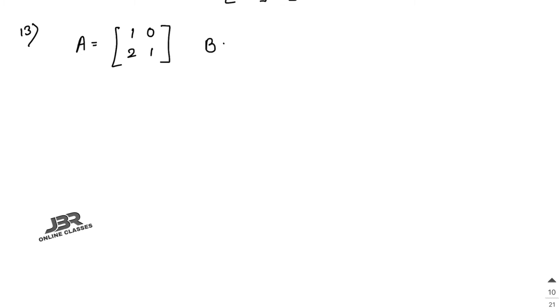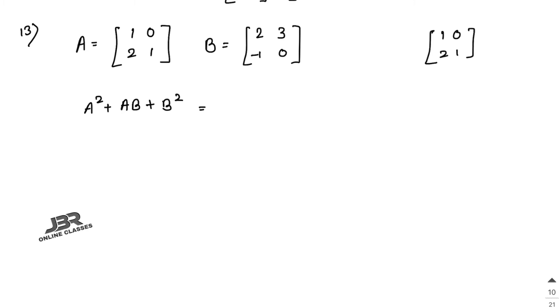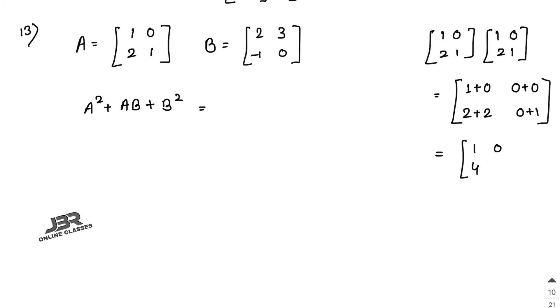Sum number 13: matrix A = [1, 0; 2, 1] and matrix B = [2, 3; −1, 0]. Find A² + AB + B². First compute A²: multiply A with itself. 1×1 + 0×2 = 1, 1×0 + 0×1 = 0, 2×1 + 1×2 = 4, 2×0 + 1×1 = 1. So A² = [1, 0; 4, 1].